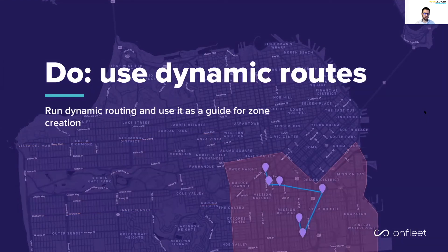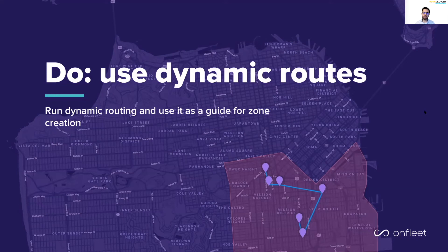One method I do encourage, although it is somewhat temporary, is to run fully dynamic routing sessions — routing unconstrained by zones — and then draw a zone around it. This is better than the previous two approaches. However, the routing optimization engine is factoring historical, real-time, and predictive traffic data in the creation of these routes. So while we're considering the road network, we're really biasing the zone creation to a specific traffic scenario. To combat this, you may need to regularly stress test these zones against fully dynamic optimizations to ensure that they're still representative of the ground truth.